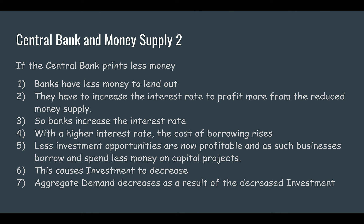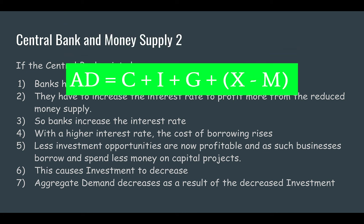As such, businesses borrow and spend less on capital projects. They say: we're not going to do that anymore because the interest rate has risen — we were going to do that at the lower interest rate, but now it's risen so we're not going to. This causes investment to decrease, and aggregate demand decreases as a result of the decreased investment. So we've seen that consumption has fallen as a result of an increase in interest rates, and investment has also fallen as a result of an increase in interest rates.